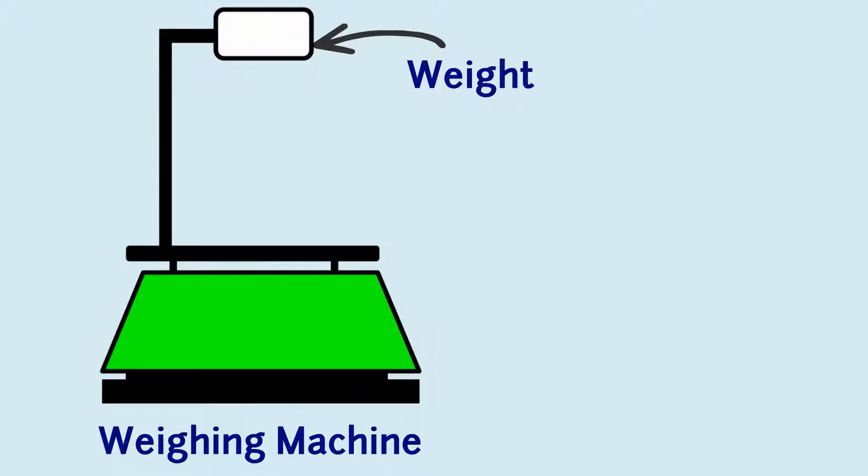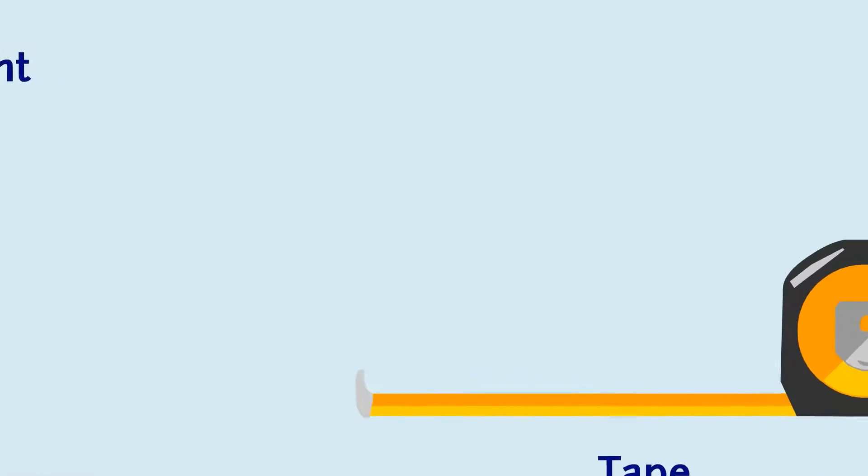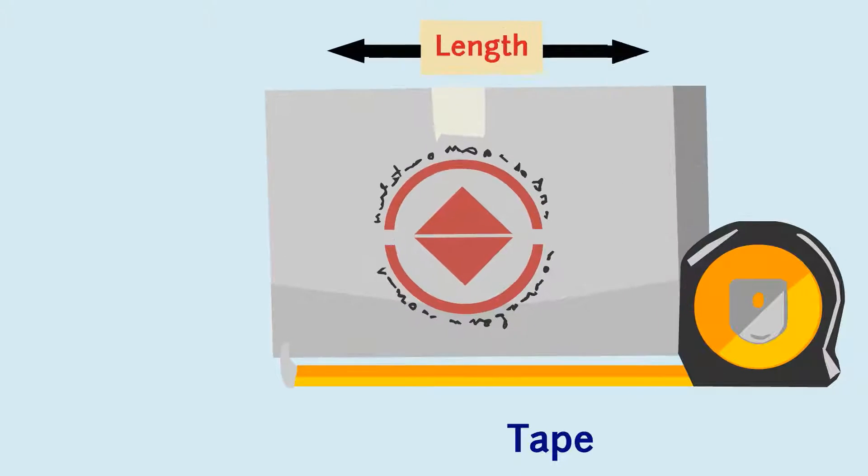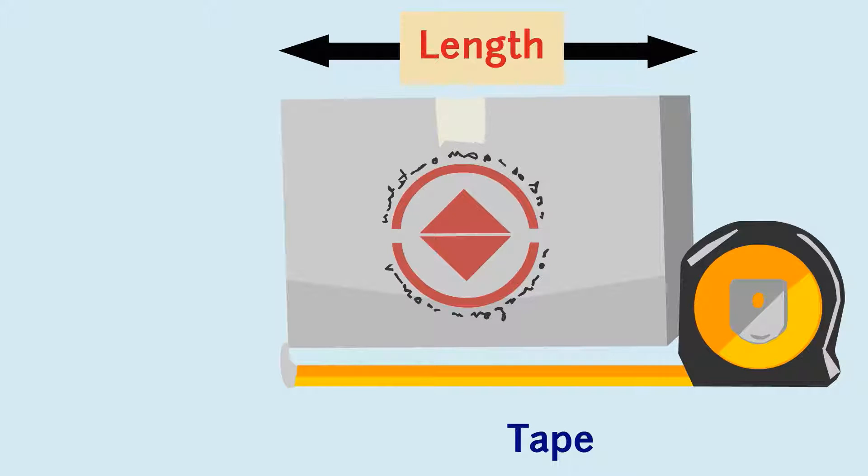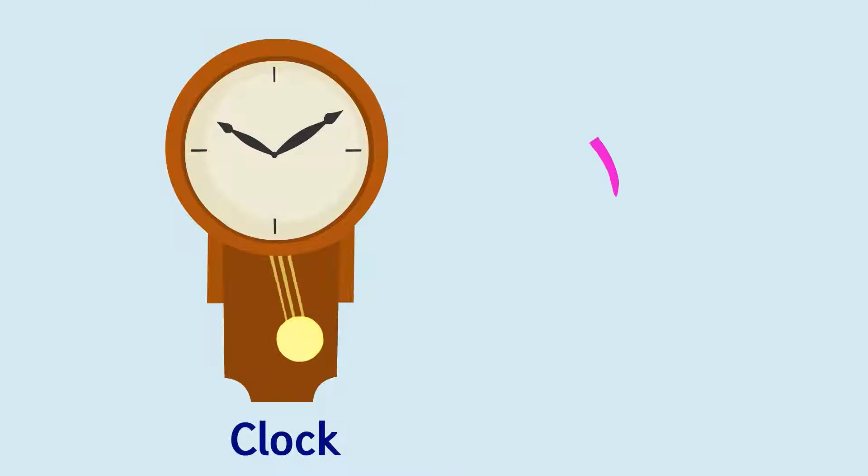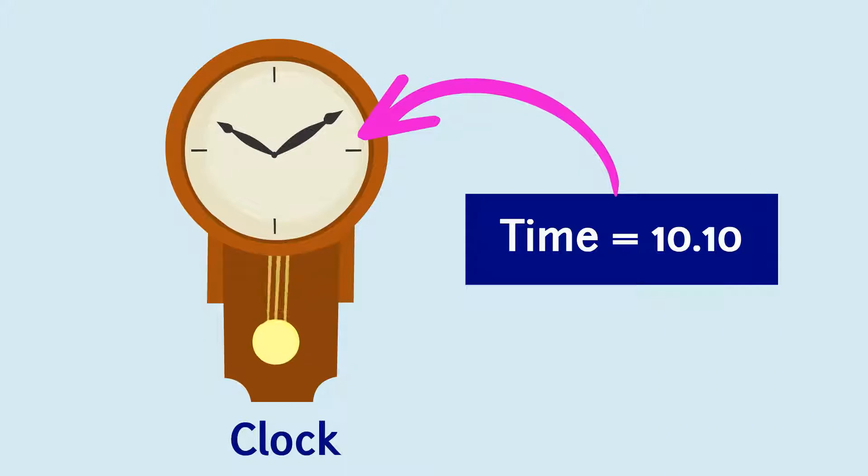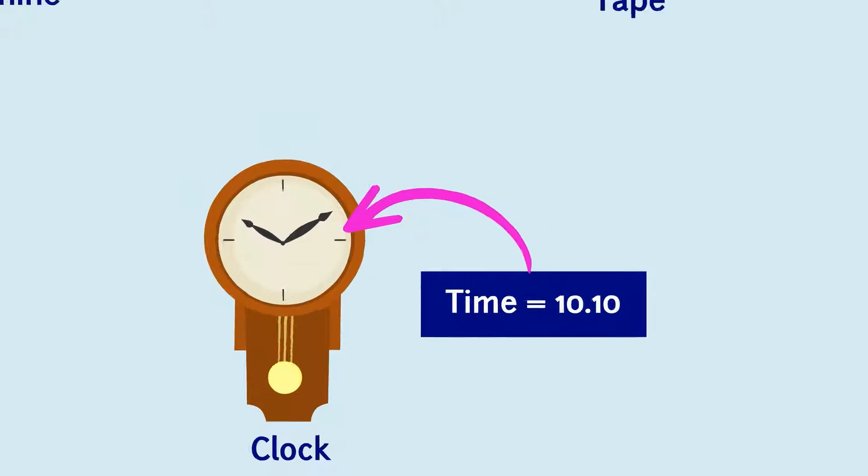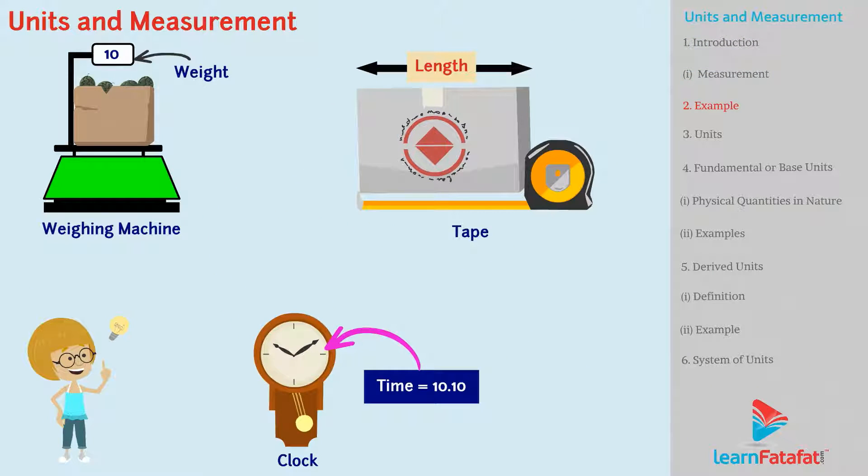You will definitely tell that the weighing machine is used to find the weight, the tape is used to find the length, and the clock is used to find the time. In short, these are used for measurement.